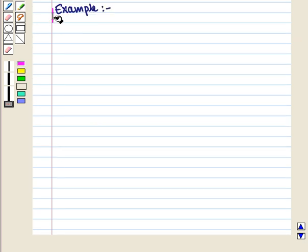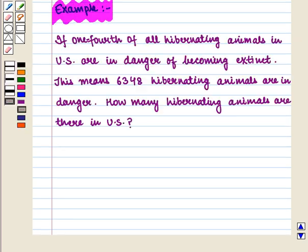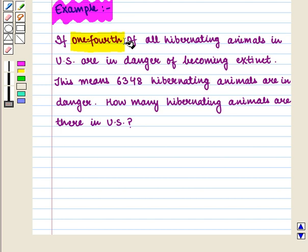Now let us consider one more example. If one fourth of all hibernating animals in US are in danger of becoming extinct, this means 6348 hibernating animals are in danger. We need to find how many hibernating animals are there in US. First we form its equation.